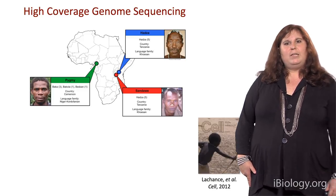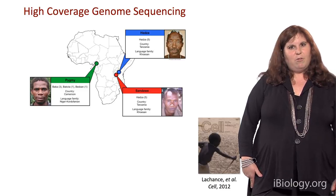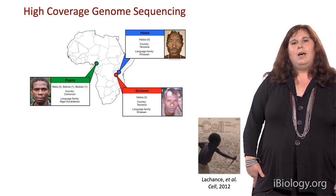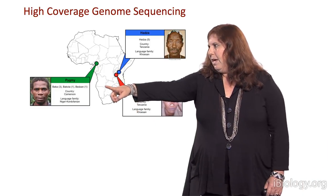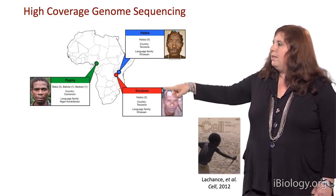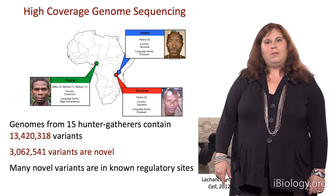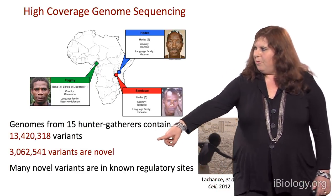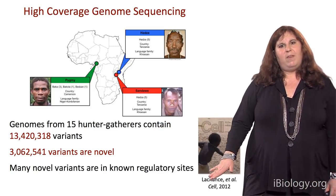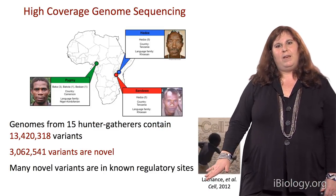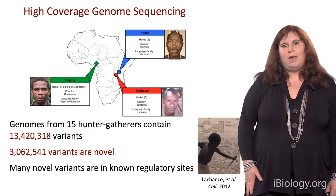The next study I want to describe involved sequencing the entire genomes at high coverage of 15 African hunter-gatherers — including five pygmies, five Hadza, and five Sandawe. We identified over 13 million variants, 3 million of which are completely novel — never previously identified. That's just from 15 individuals, so you can imagine how much variation is out there.